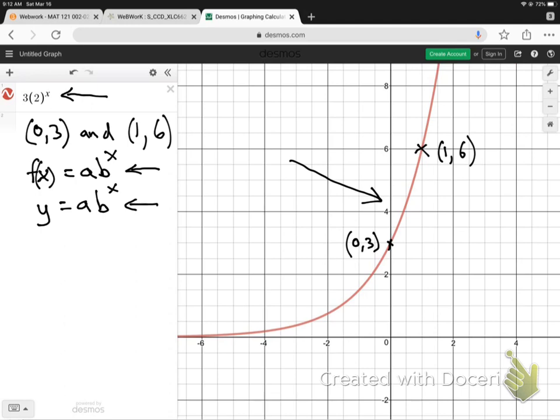We can write it like this. Instead of f(x), we can write y equals. So we are going to put the x and y coordinates into this equation. I'm going to start with this as this is the easiest, (0,3). The y-intercept is 3, right here.